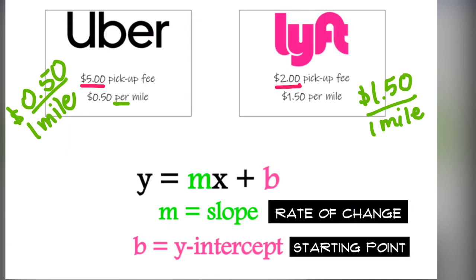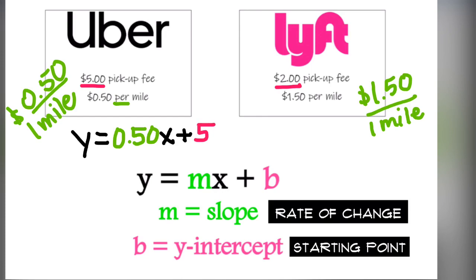Let's start with Uber. y equals — our slope is $0.50 per mile, so we write 0.50 times x, because x is unknown; I don't know how many miles you're actually going to travel. But what I do know is you're going to be charged that $5 as soon as you order the Uber. As for Lyft, the rate is $1.50 per mile, so my slope is 1.50 times x, and the y-intercept is $2, because I will be charged $2 as soon as I order the Lyft.